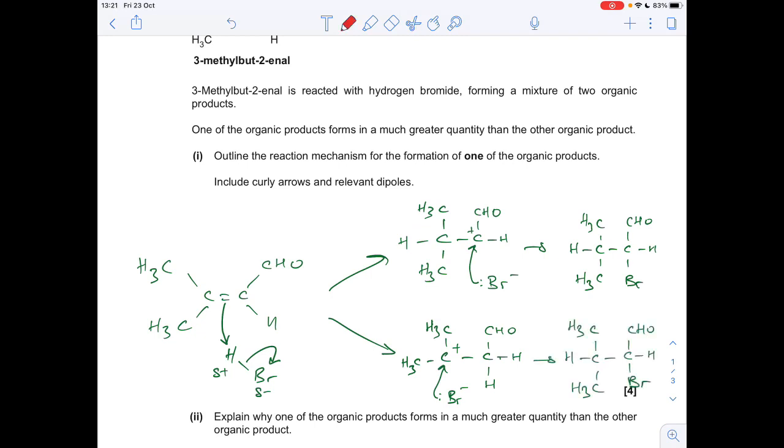Next part of the question is to explain why one of the organic products formed in a much greater quantity than the other organic product. Well, it's all to do with the stability of the carbocations. So we'll just work out what kind of carbocations we've got. So it's all to do with how many carbon atoms are bonded directly to the carbon with the positive charge. So we've got two carbons directly bonded to that one. So that is a secondary carbocation. Whereas this carbocation here, you can see the C+, has one, two, three carbon groups attached. So this is a tertiary carbocation. Now, because tertiary carbocations are the most stable of the two we've got in this question, we're going to get more of this product forming than this one.